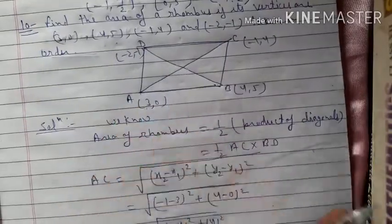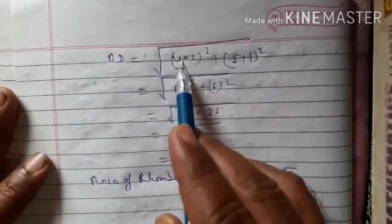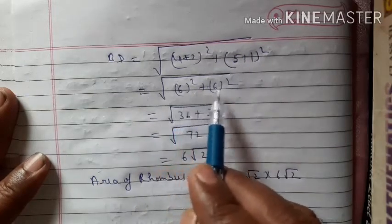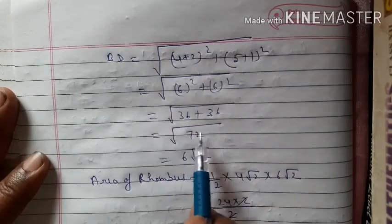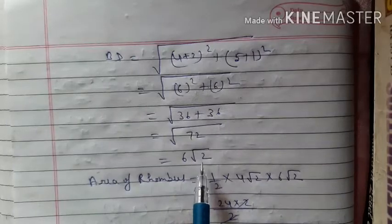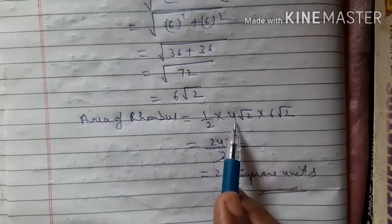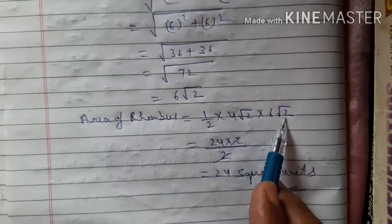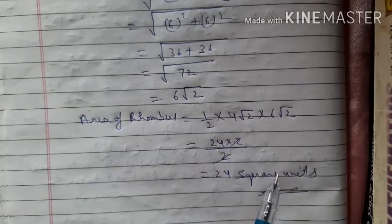For BD: B is (4,5) and D is (-2,-1). BD = √[(4-(-2))² + (5-(-1))²] = √[6² + 6²] = √[36+36] = √72 = 6√2. So area of rhombus = (1/2) × AC × BD = (1/2) × 4√2 × 6√2 = (1/2) × 24 × 2 = 24 square units.